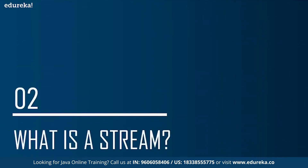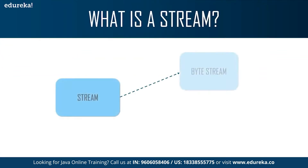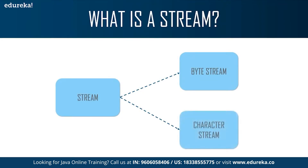Let's now understand what a stream in Java is. A stream is a sequence of data. It can be of two types: byte stream and character stream. Talking about the byte stream, it mainly incorporates byte data — when an input and output process happens with byte data, it is called the file handling process with byte stream. Talking about the character stream, it is a stream which incorporates characters — when an input and output process happens with a character, it is called the file handling process with character stream. So these are the two types of streams that are available.